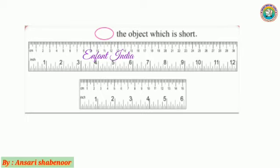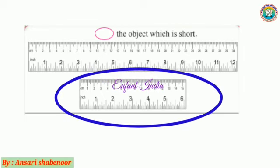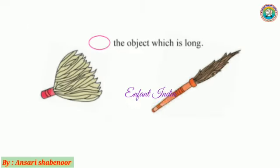One is long and another is short. The question is: circle the object which is short. We have to circle the object or the scale which is short. So which one is short? Very good, the second one is short, so we will circle it.